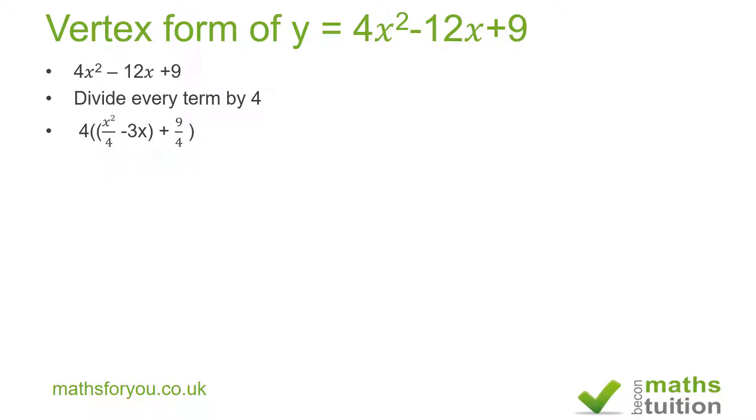Okay, now what I do is try completing the square for this section here. To do that, I look for the square root of x² over 4, and that will give me x/2, minus half the coefficient of x. The coefficient of x is 3, so half of 3 will be 3/2.